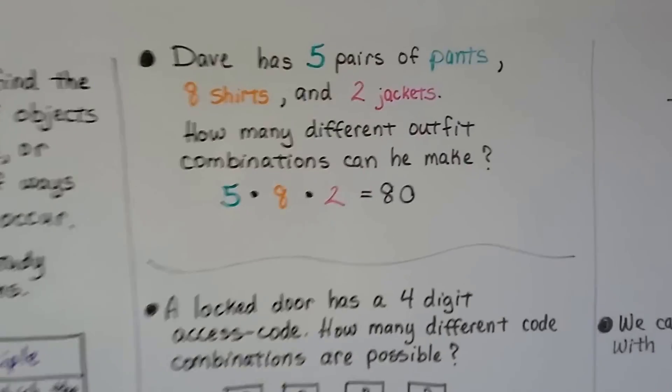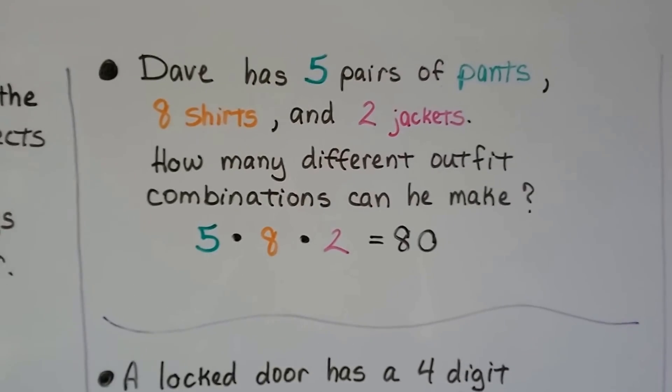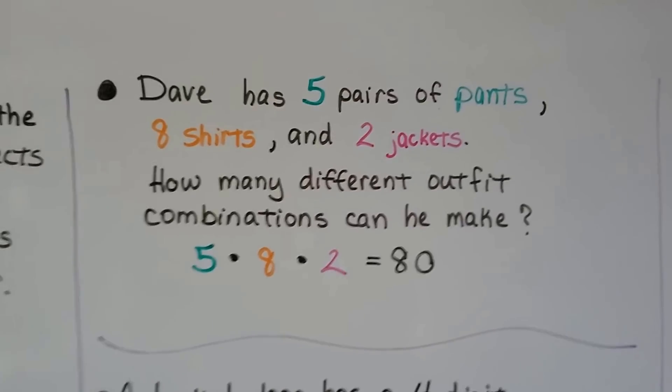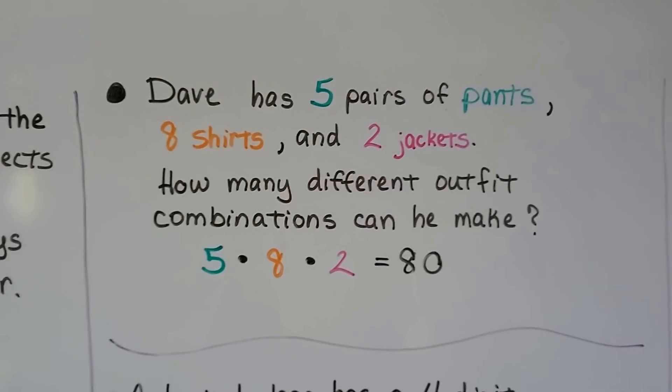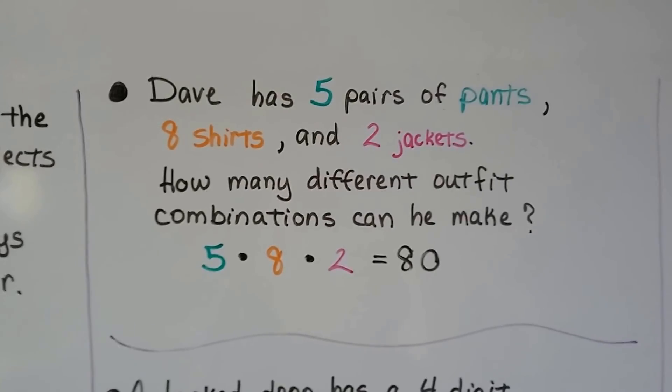So Dave has 5 pairs of pants, 8 shirts, and 2 jackets. How many different outfit combinations can he make? We do 5 times 8 times 2. 5 times 8 is 40, times 2 is 80. Isn't that easy?